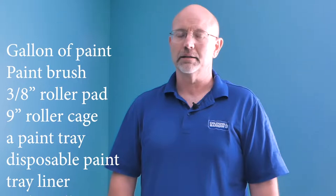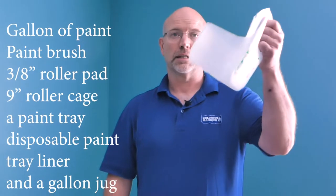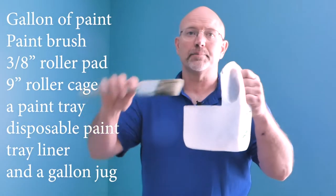I went to the local Hayes Hardware store to cost out the items needed. It ran about $65. You need a good quality gallon of paint, a good paintbrush, I prefer a 2 inch Wooster, this is the Pro Series with the angled edge, a 3 1/8 inch nap roller pad, a 9 inch roller cage, a paint tray, disposable paint tray liner, very handy, and a gallon jug. Cut in half like this makes a great paint pail for trimming.